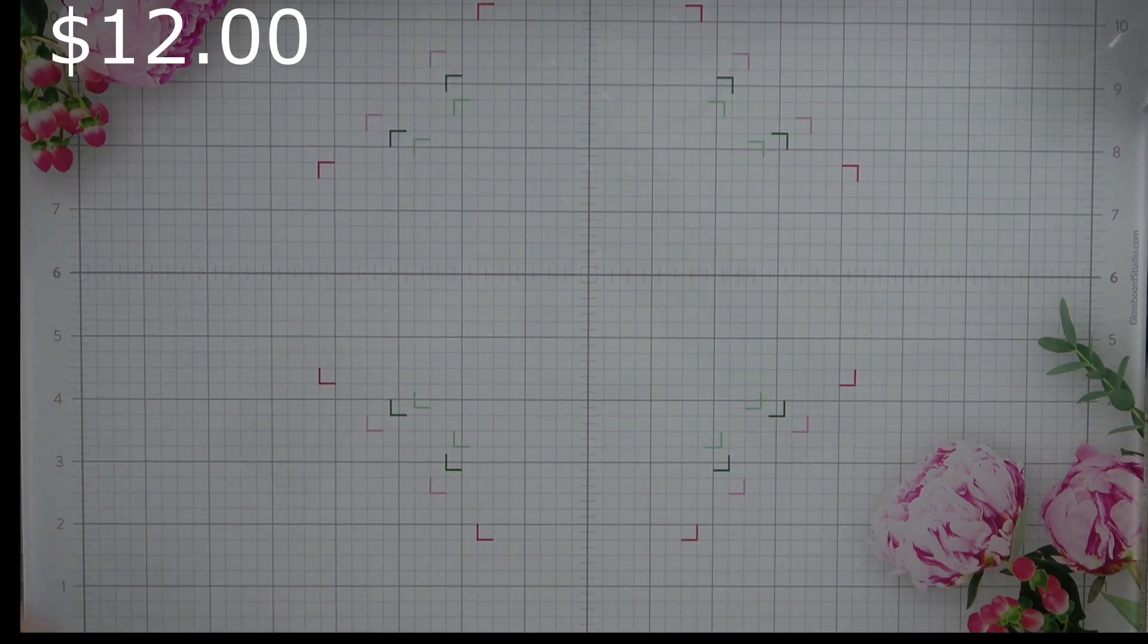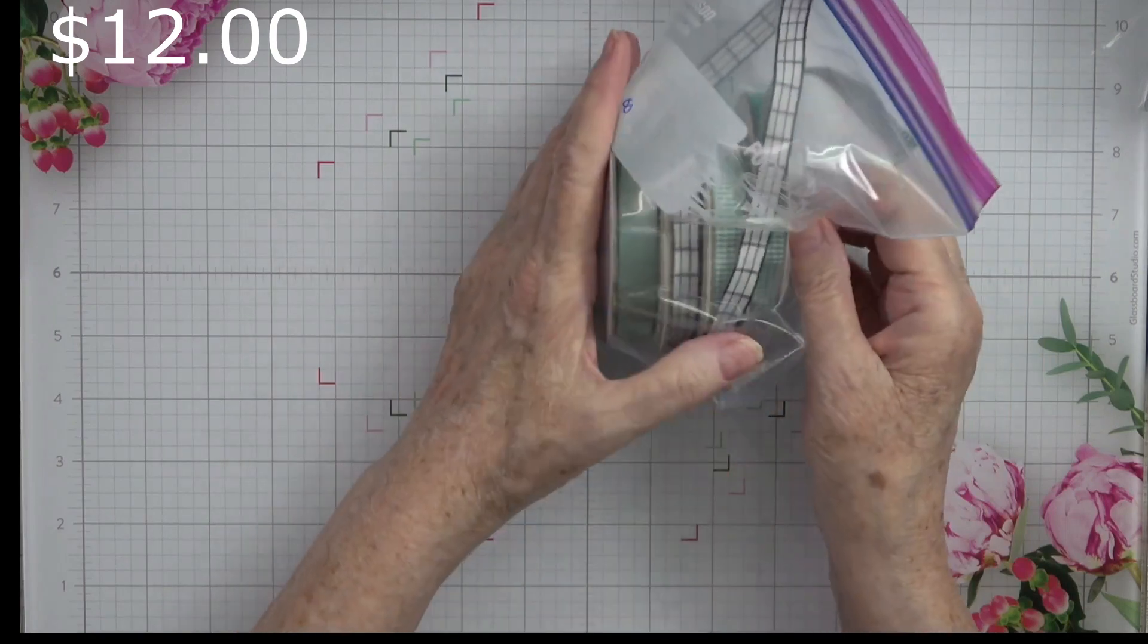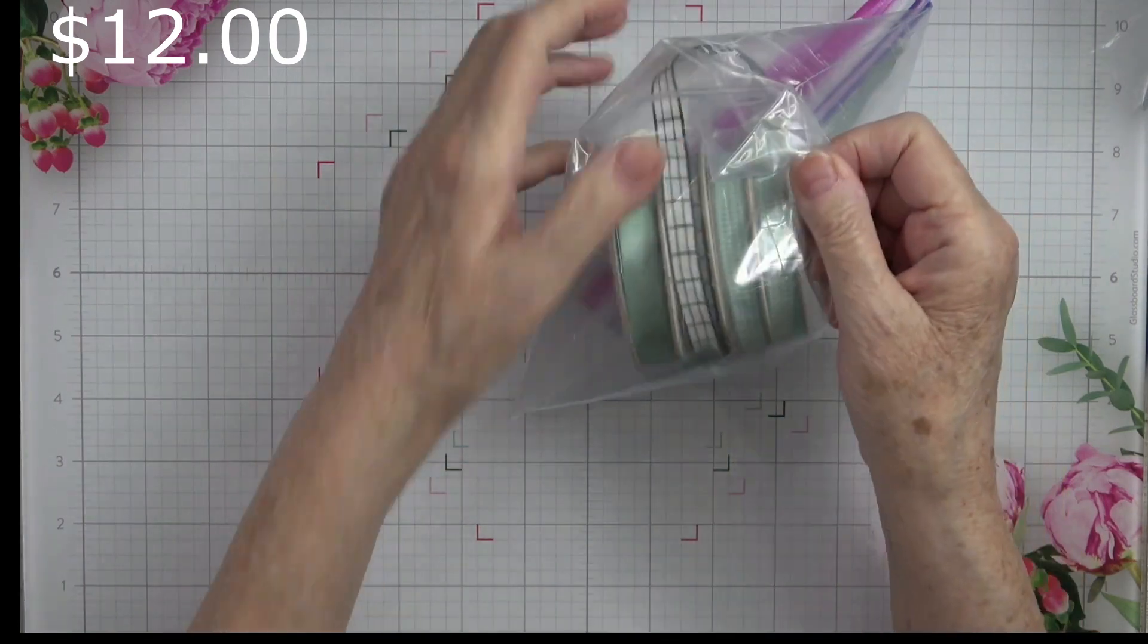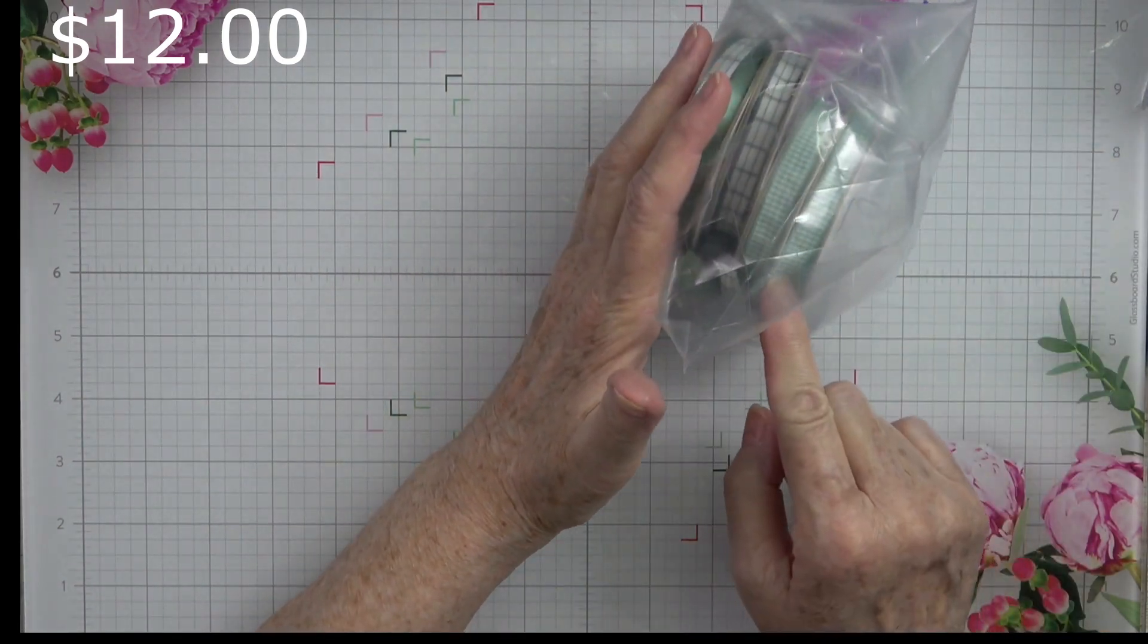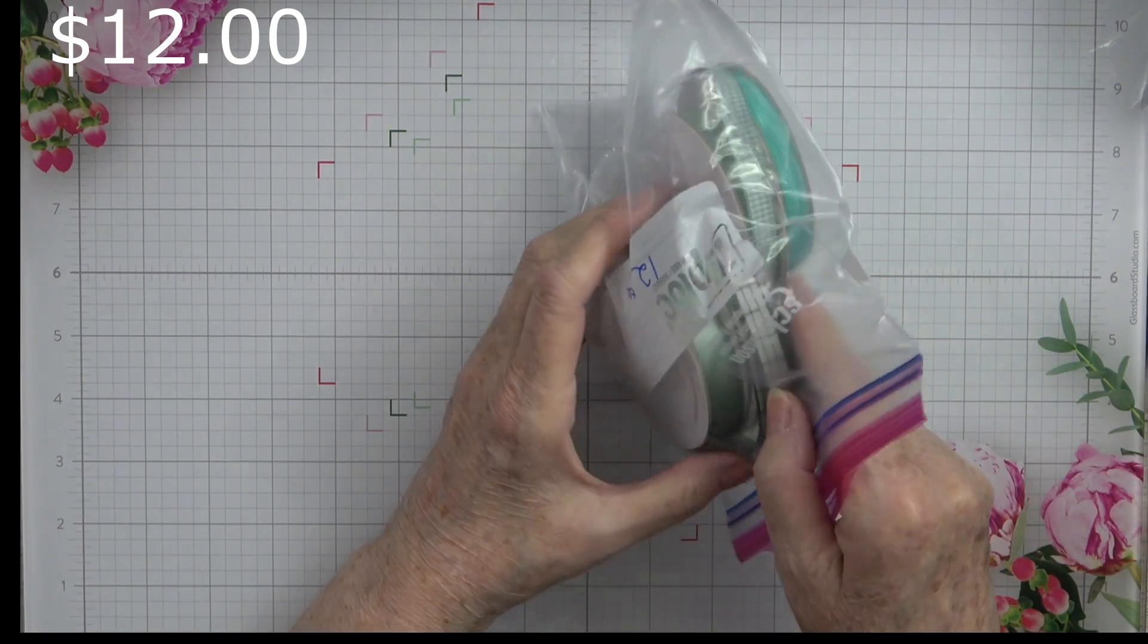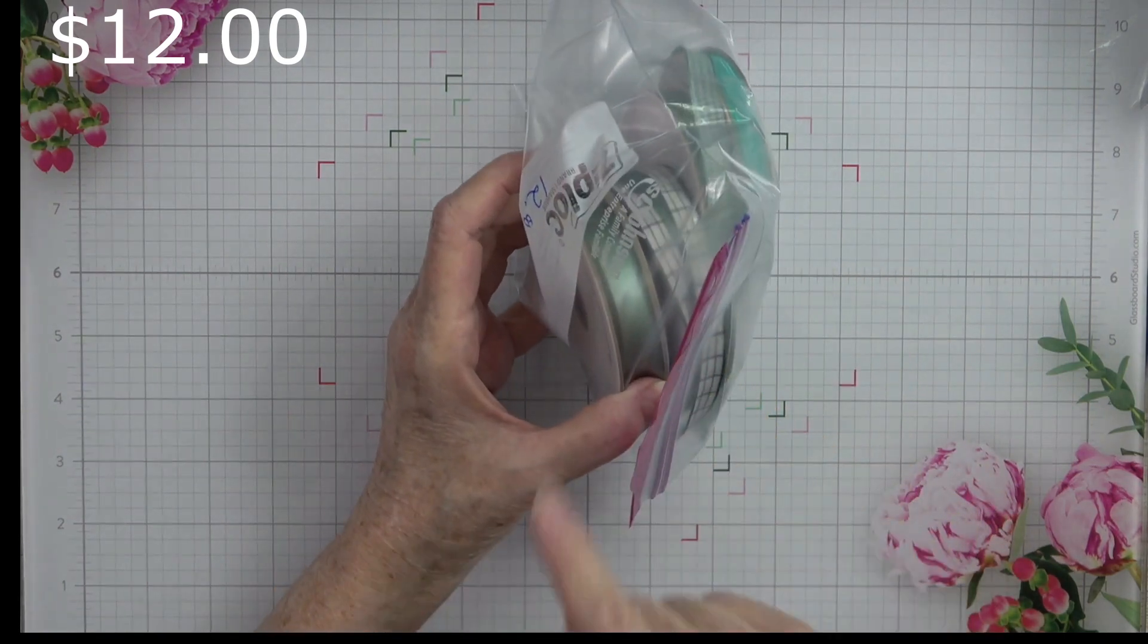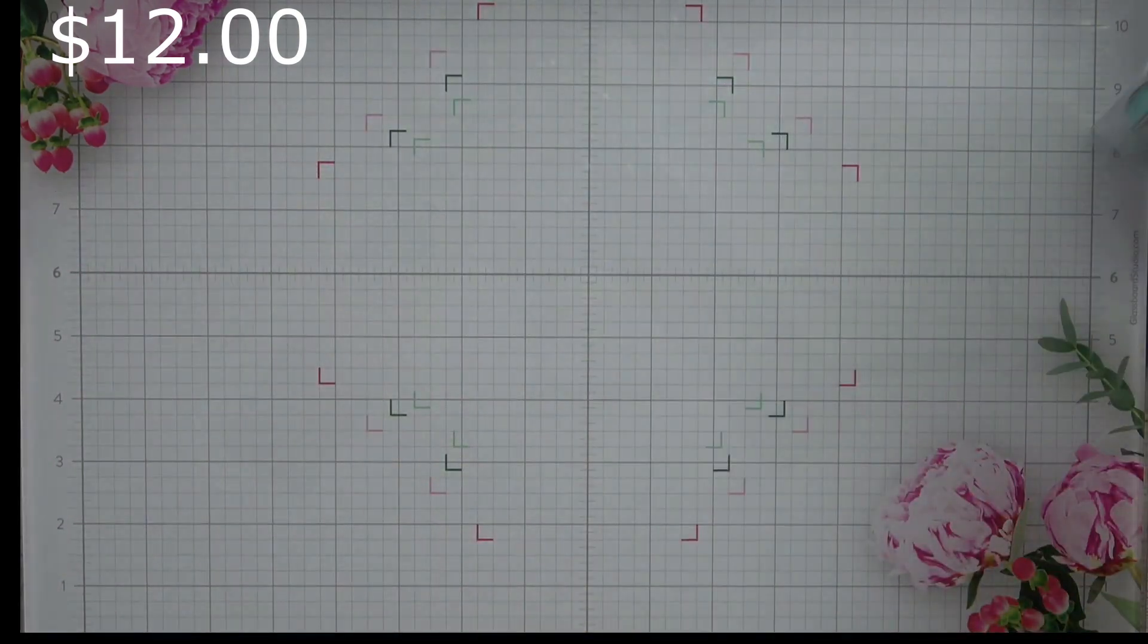The next one I have is $12, and it is a pack of some beautiful ribbons. I have some gingham. This one here is just a textured ribbon, looks like Pool Party. This is a windowpane ribbon with a darker green, and then we got this beautiful satin ribbon, and that one is $12.